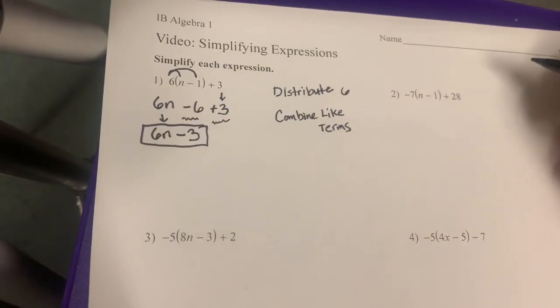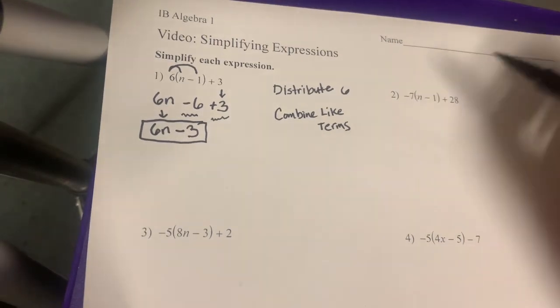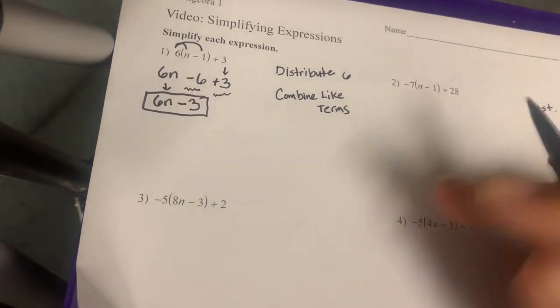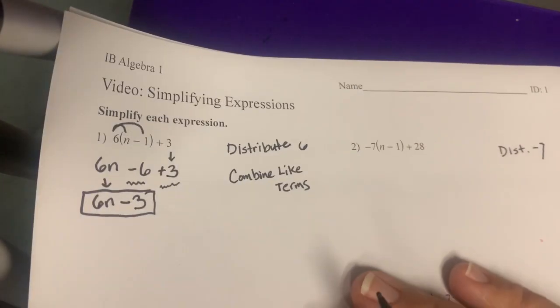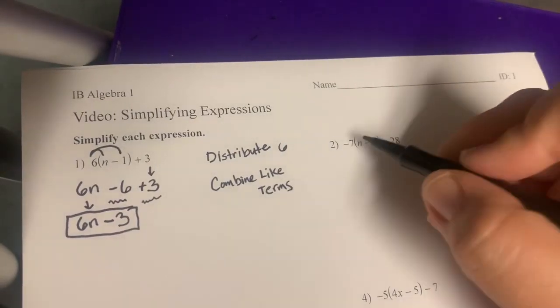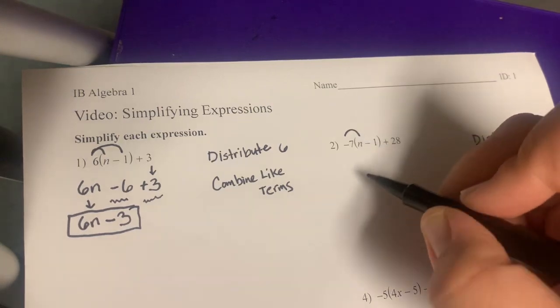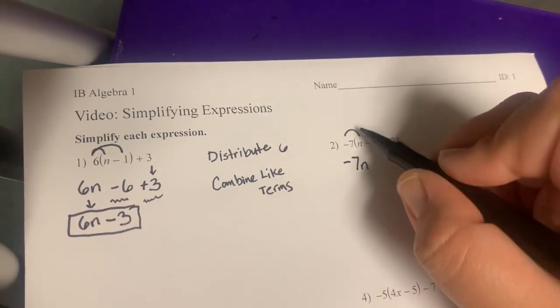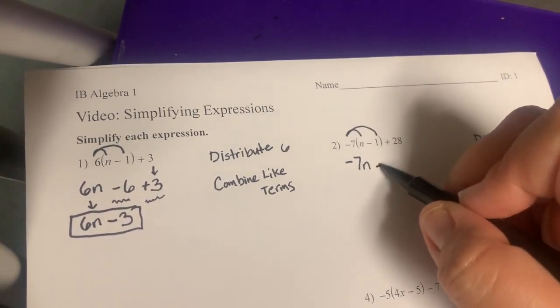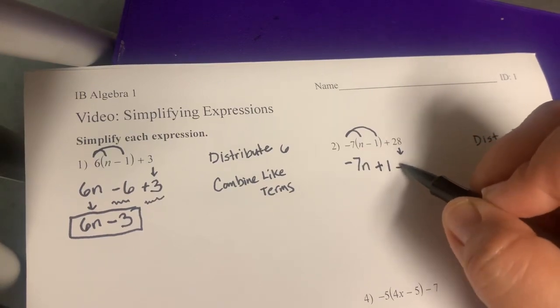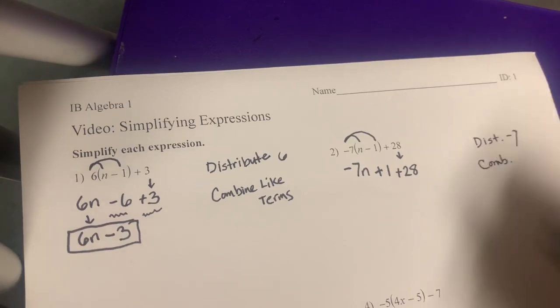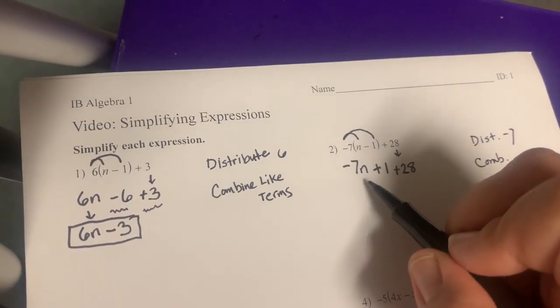All right, number two. Again, we're going to distribute, but this time we're going to distribute the number in front, which is a negative 7. So we're going to distribute negative 7, and if we're going to distribute a negative 7, we have to multiply the negative 7 through the parentheses. That means negative 7 times n is negative 7n. And we've got to do negative 7 times negative 1. Negative times negative is a positive, so that's plus 1, and I'm going to bring down the 28, positive 28.